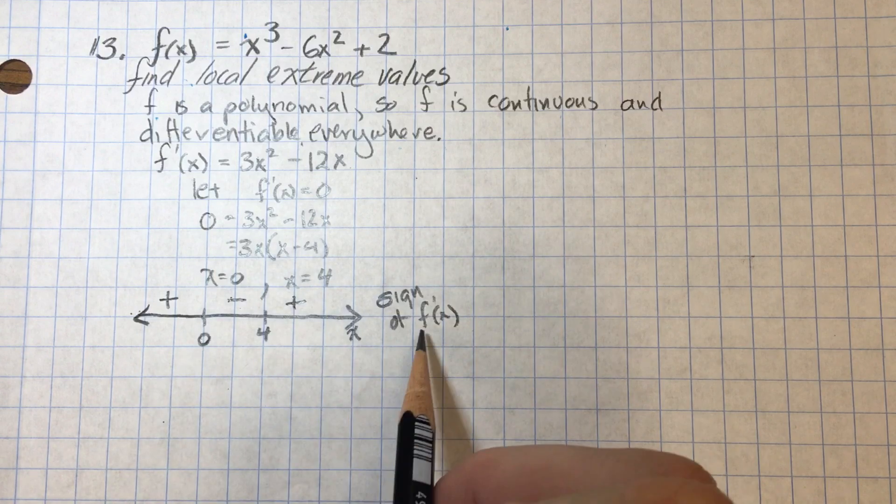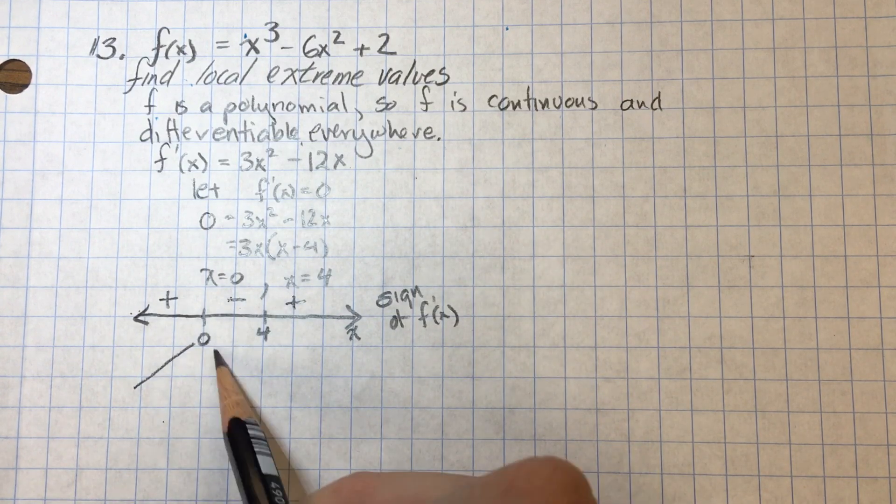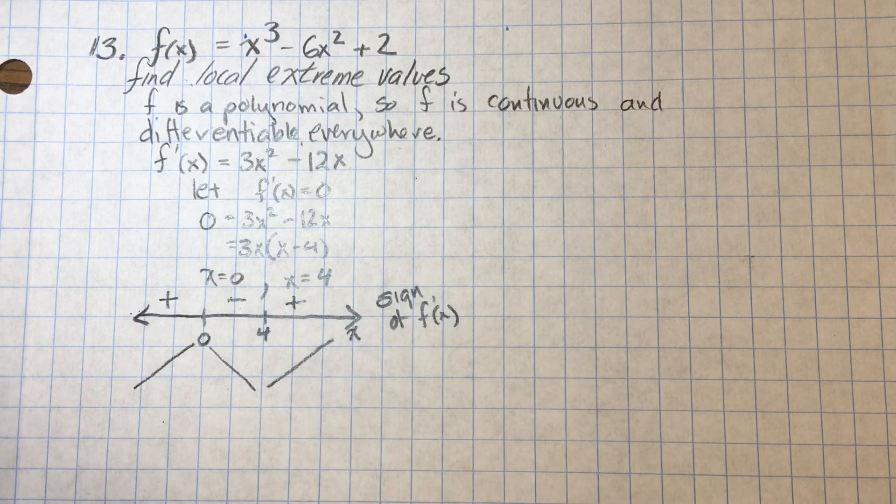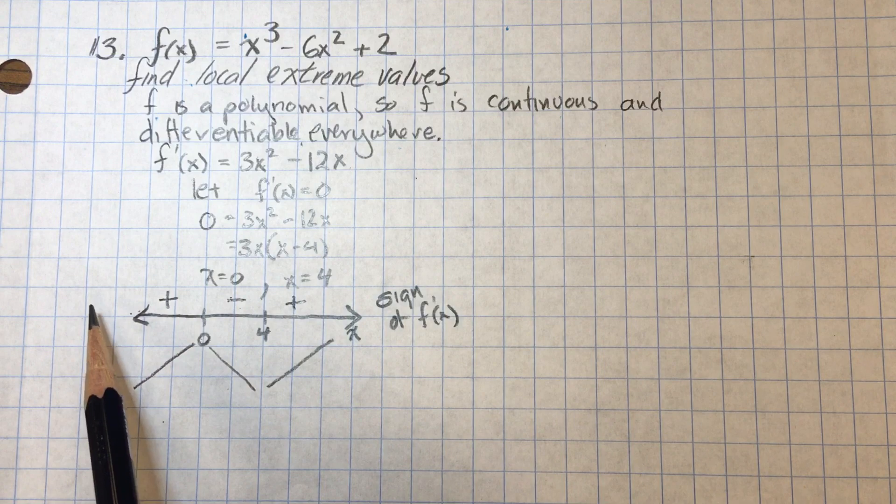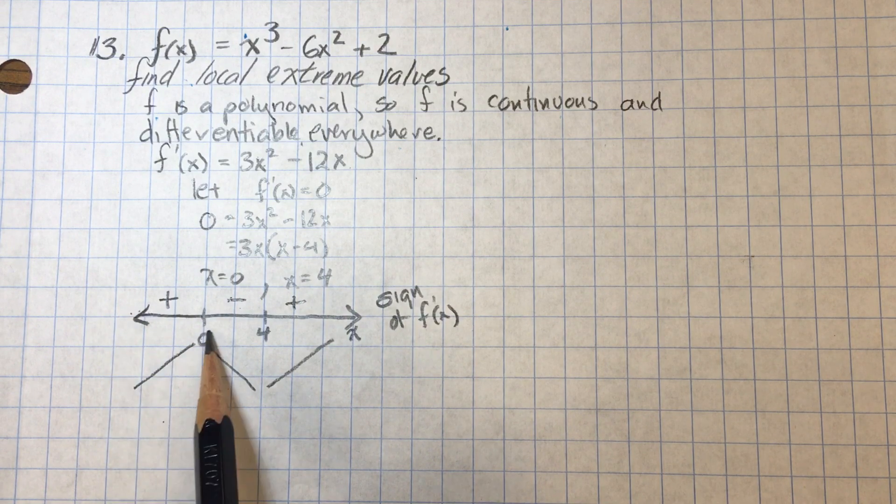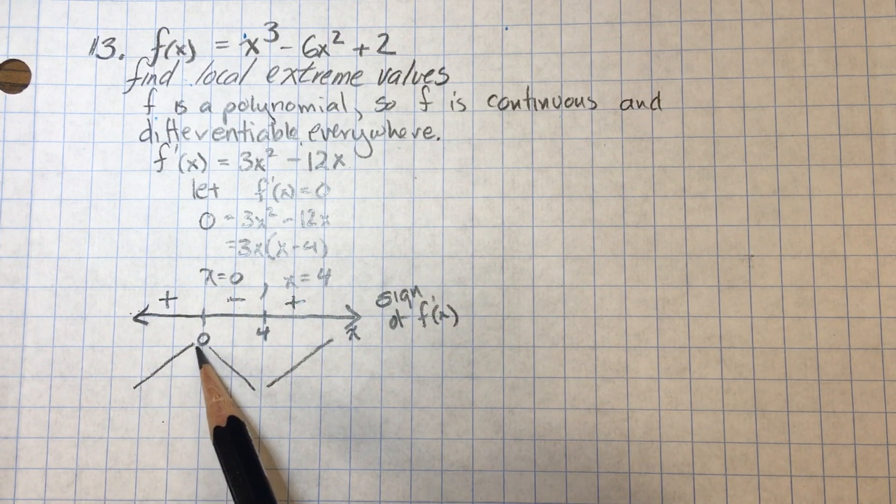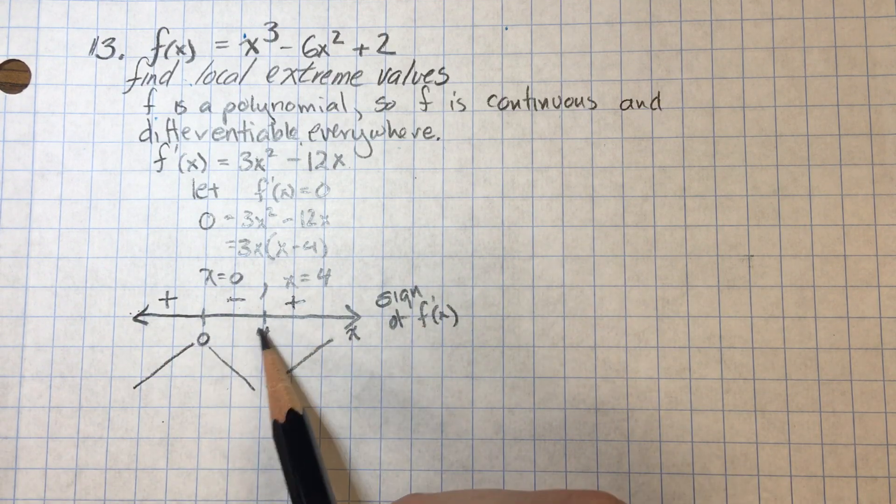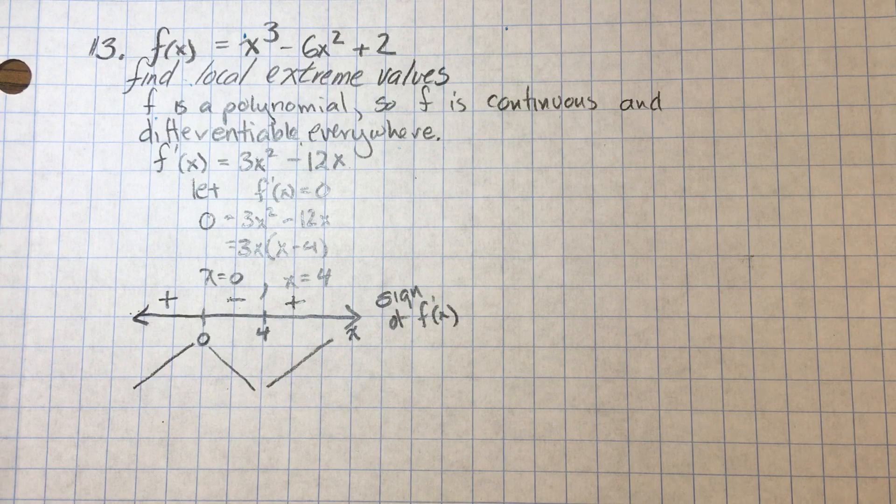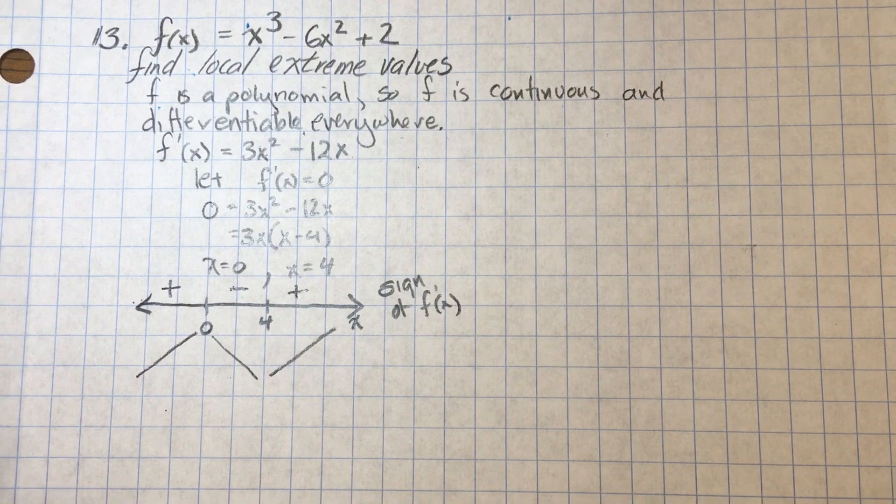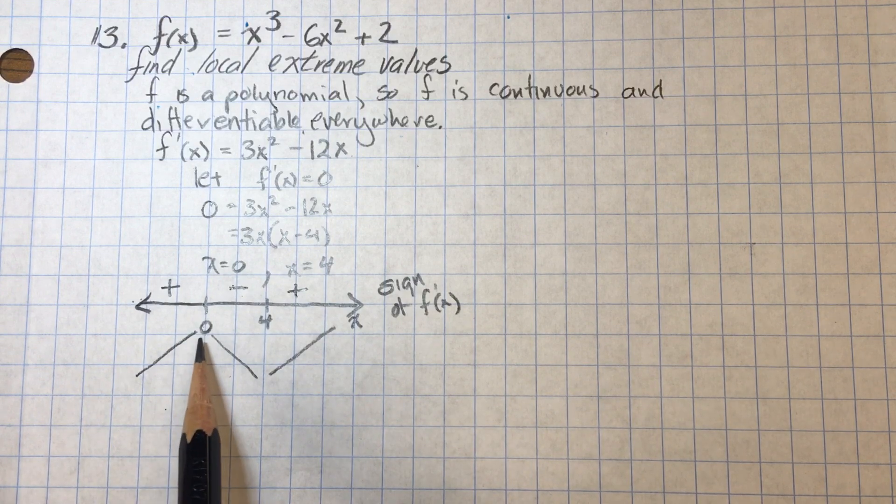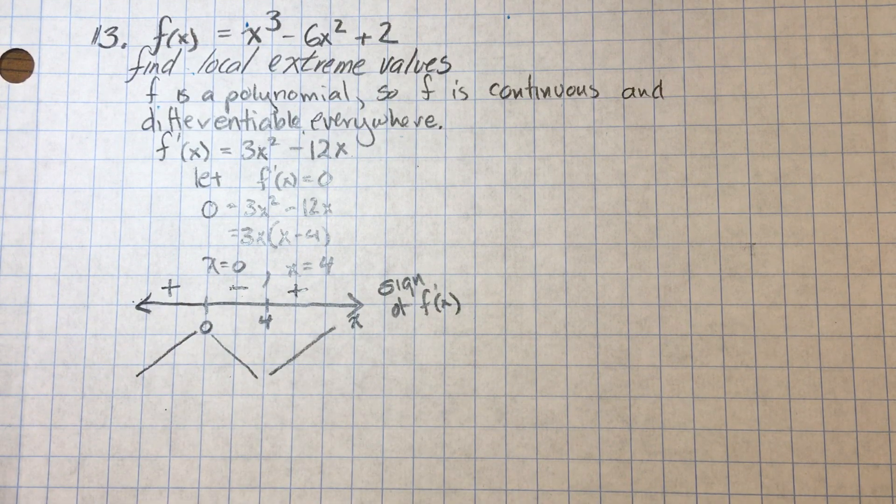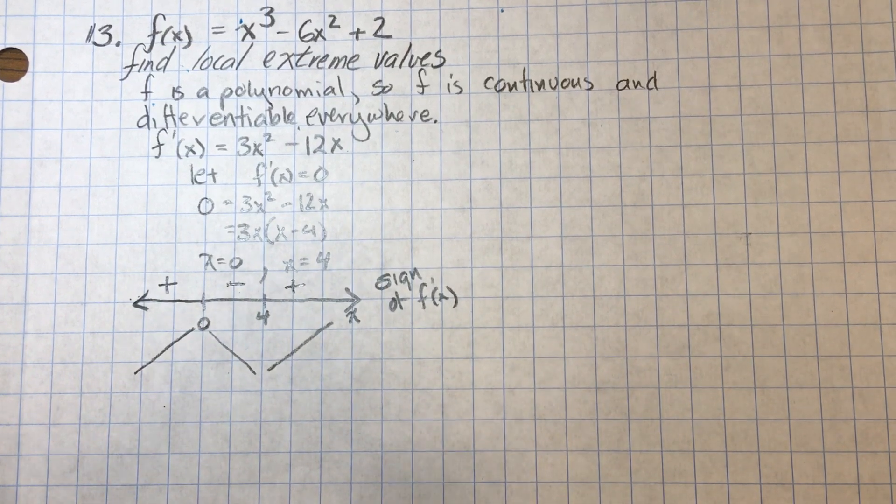So that means F is going to increase from negative infinity up to zero, decrease from zero to four and increase from four to infinity. F prime is positive from negative infinity to zero, which means F is increasing. F prime is negative from zero to four, which means F is decreasing from zero to four. I wasn't asked about that. I was asked about local extreme values. And hopefully you can see F has a local maximum at zero. F has a local minimum at four. We need to write our answers.